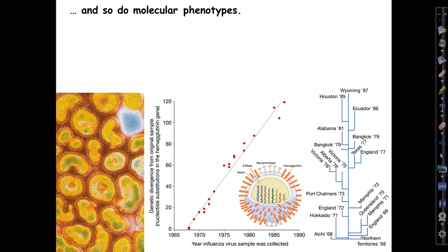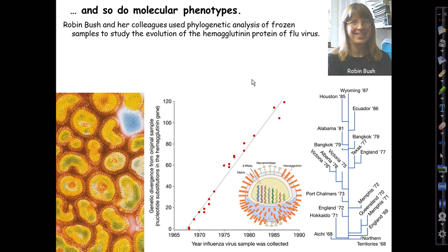Molecular phenotypes evolve rapidly too. We haven't considered them to this point, so now we'll look at one. This is a study by Robin Bush at UC Irvine and colleagues on the proteins of flu virus. They used frozen samples of flu virus collected since the 1960s — and actually even earlier — to sequence the viral genome and look especially at the two proteins that decorate the outside of the envelope of the virus: the hemagglutinin — these rod-shaped things in orange in the cartoon of the virus — and also neuraminidase, another coat protein that interacts a lot with our immune system.